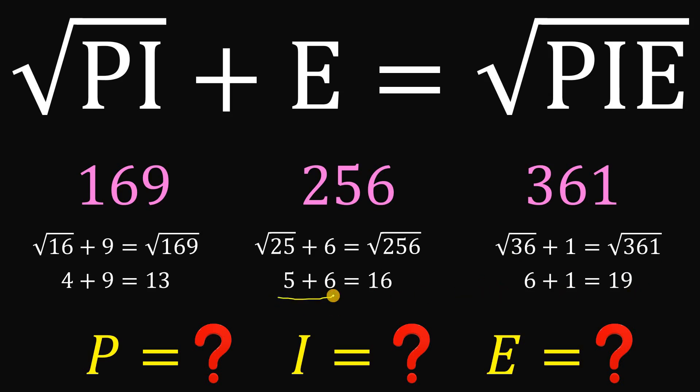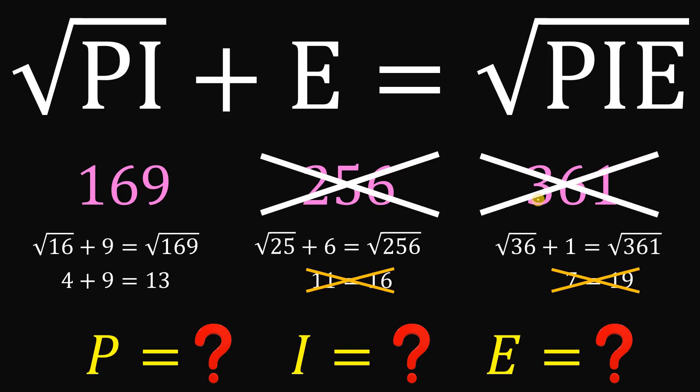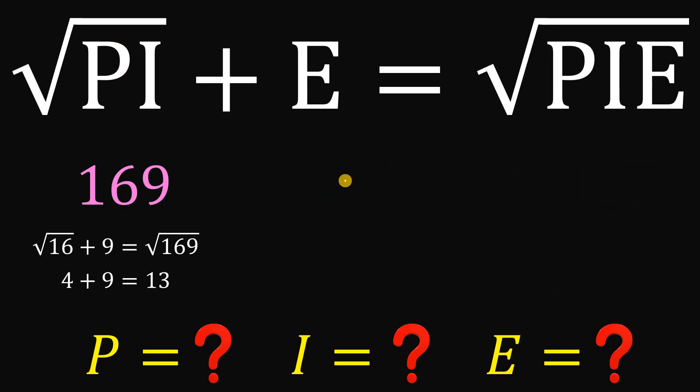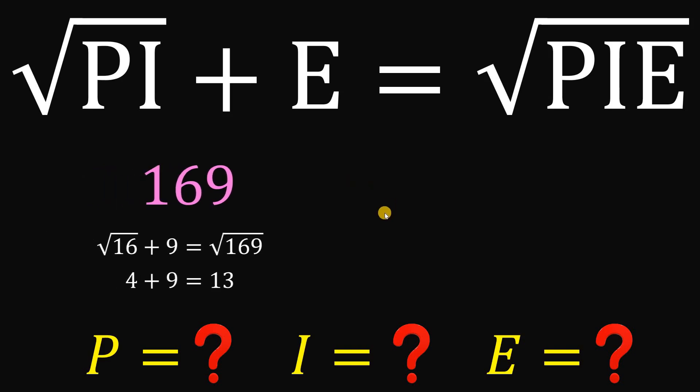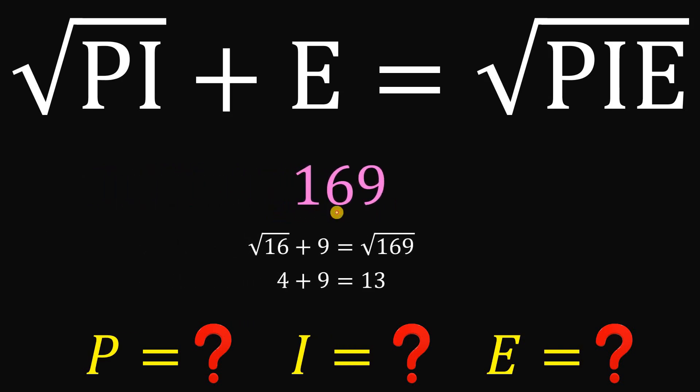Now 5 plus 6 is just 11 and we know 11 is not equal to 16. So this is not accepted. Also 6 plus 1 is 7 and 7 is not equal to 19. So this is also not accepted. So 256 is eliminated and 361 is also eliminated. And the only possible choice for PIE is this number 169.